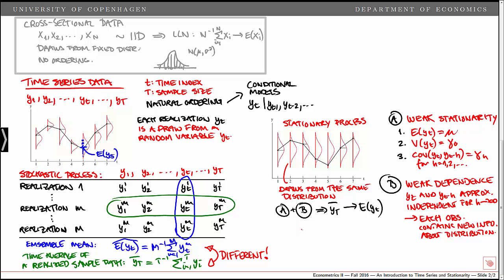Also, note that for the cross-sectional data, we work with the assumption of the data being IID. And that implies that a law of large numbers holds, but also that a central limit theorem holds in the simplest possible form. Now, the IID assumption is not an assumption that is usually fulfilled for our time series data.